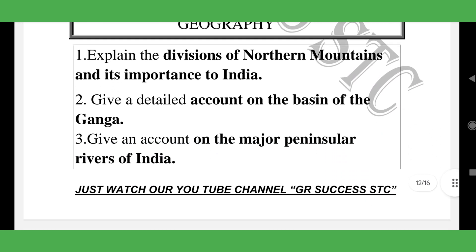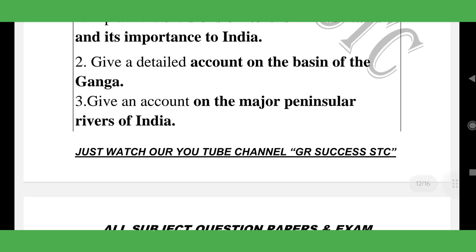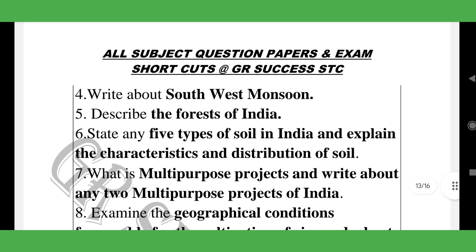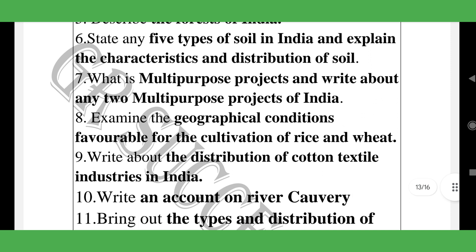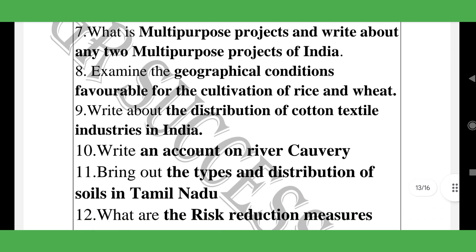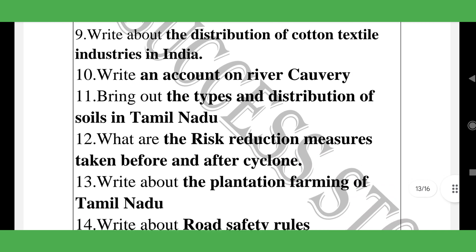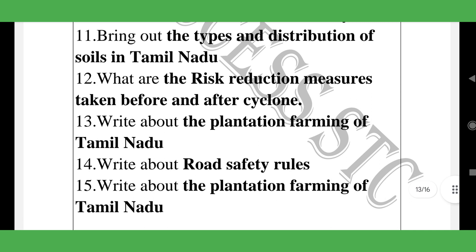Geography eight-mark questions: Northern Mountains and their importance, Basin of the Ganga, Peninsular Rivers of India, South-East Monsoon, forests of India, five types of soil, multi-purpose river projects, geographical conditions for cultivation of rice and wheat, cotton textile industry, River Cauvery, distribution of soil, risk reduction measures before and after a cyclone — all eight-mark questions.